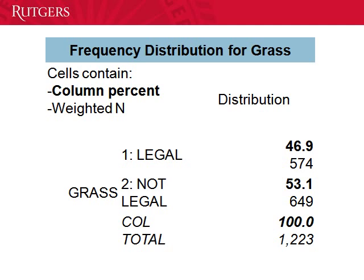I ran the frequencies and here's my result: 46.9% of the sample said marijuana should be legal, while 53.1% said it shouldn't be. There were 1,223 people in the sample who responded. Now I wonder — could there be a difference in this attitude by sex? To find out, we'll perform a cross-tab with a chi-square statistic to see if there is a difference, and if so, whether that difference is statistically significant.